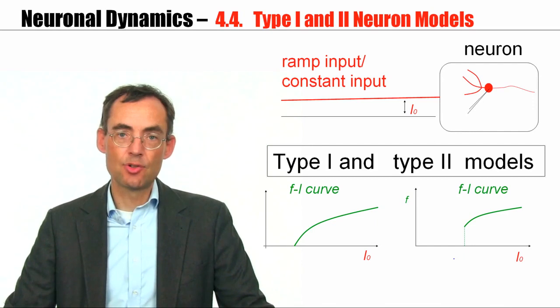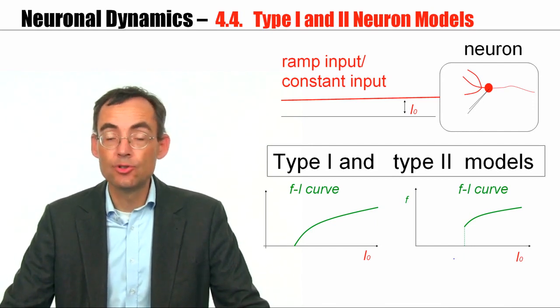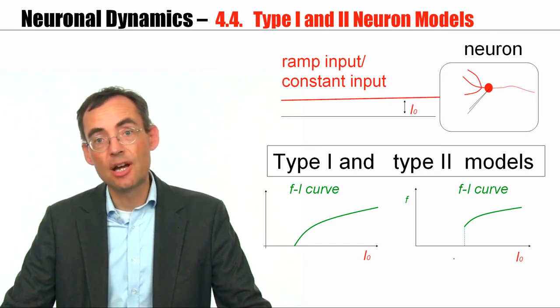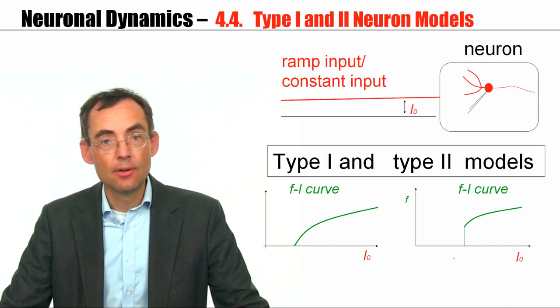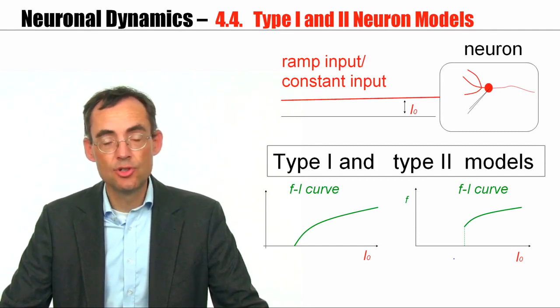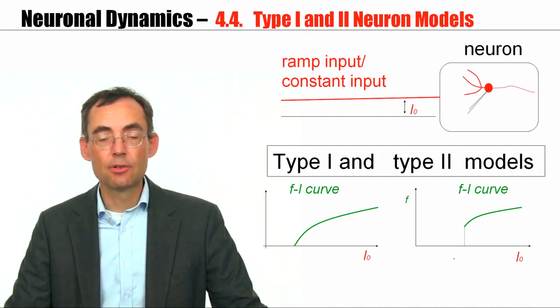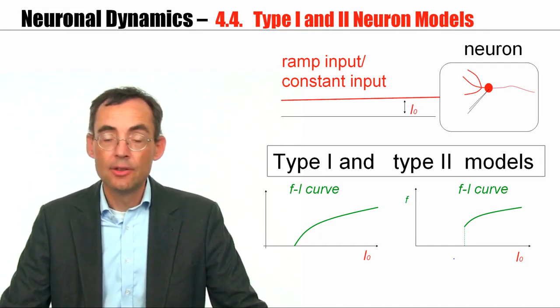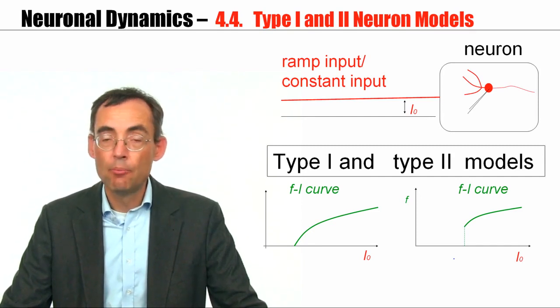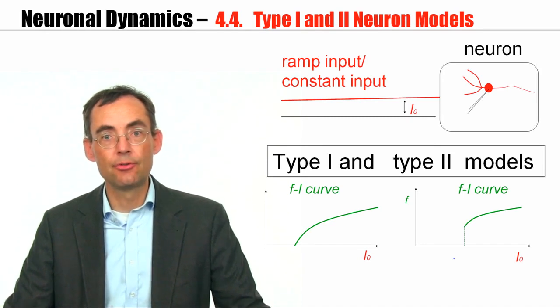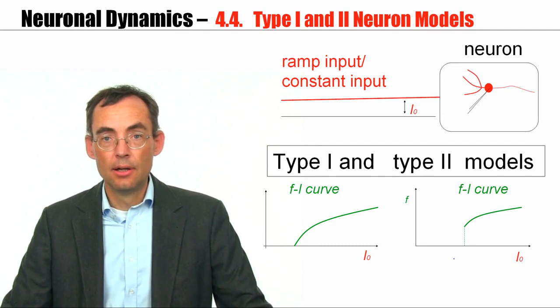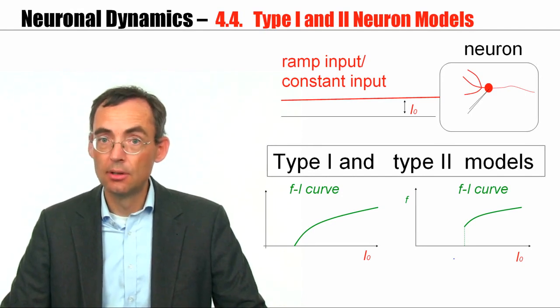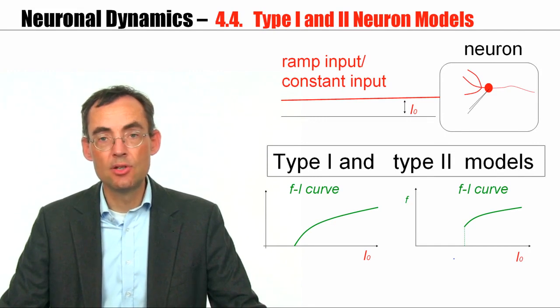To summarize, biologists have made a distinction between Type 1 neurons, those that have a continuous gain function, those that are able to fire at very low frequency on one side, and Type 2 neurons, those that have a minimal firing frequency and which have a discontinuous gain function. And the question arises whether such a difference must be attributed to specific ion channels. Now, the mathematical analysis that I have presented, based on a long line of research of theoretical neuroscience, suggests that there are basic mathematical, as opposed to biological, properties that allow us to explain this distinction. Thank you very much for watching.